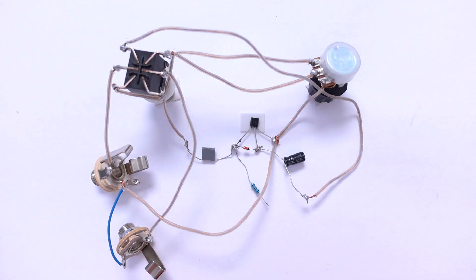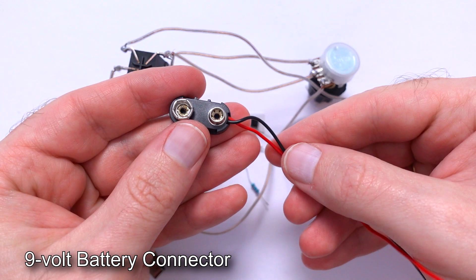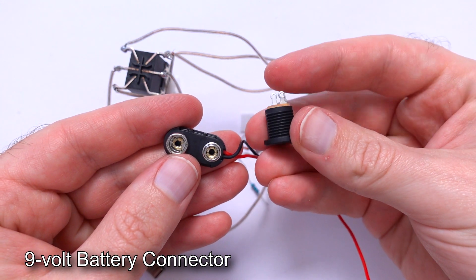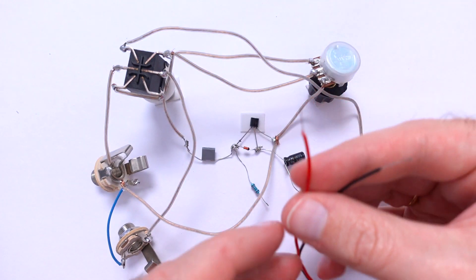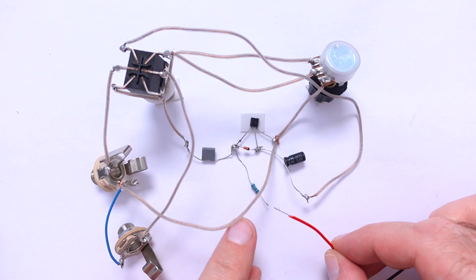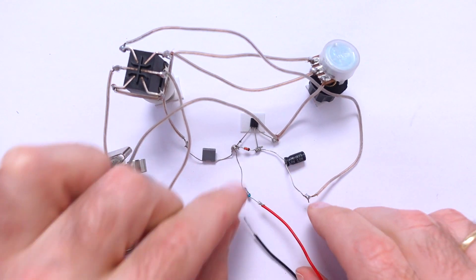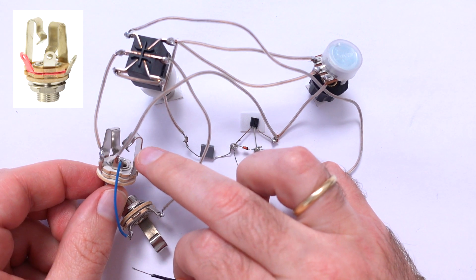And the last step, to attach this 9V battery connector. If you want you can use power jack socket like this one. So the red wire, positive, connect to the free tip of resistor. And the black one connect to the middle lug of stereo jack.